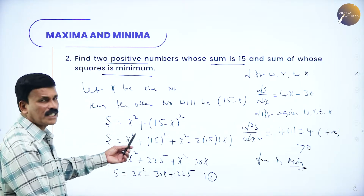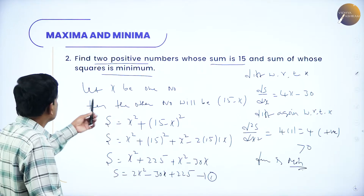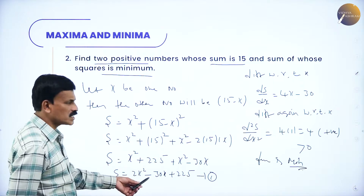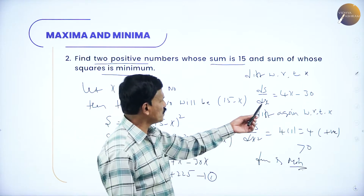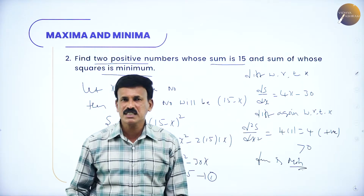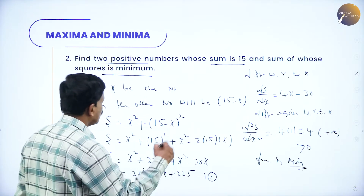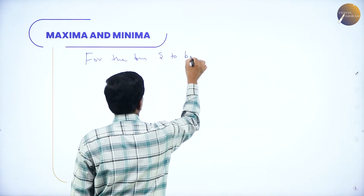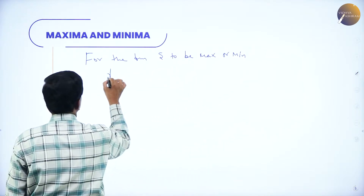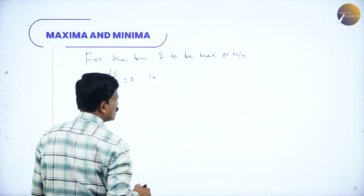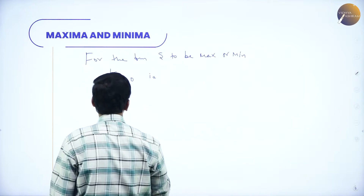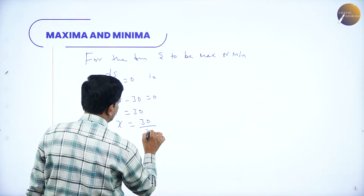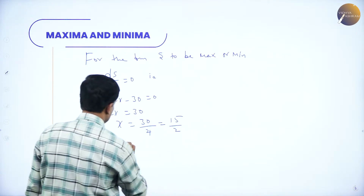For the function to be maxima or minima, set ds/dx equal to 0: 4x minus 30 equals 0, so 4x equals 30, therefore x equals 30/4, which is 15/2. At x equals 15/2, ds/dx equals 0 and d²s/dx² equals plus 4, which is greater than 0. Therefore the function is minimum at x equals 15/2.